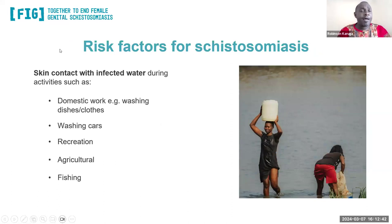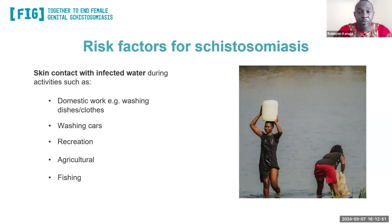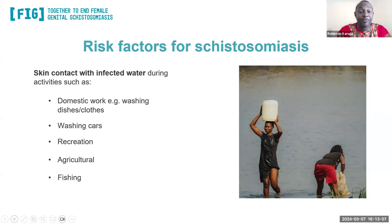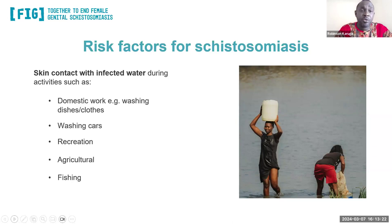Transmission through the skin happens when persons get into contact with freshwater bodies that are contaminated — either as they're doing domestic work, washing cars, swimming or playing in the water, agricultural activities such as rice farming or other forms of aquaculture, and even fishing in these contaminated waters. It's important to note that this is also a gendered disease — a lot of mothers and girls spend time in this water doing routine domestic chores, so there's a gender dynamic related to this disease.